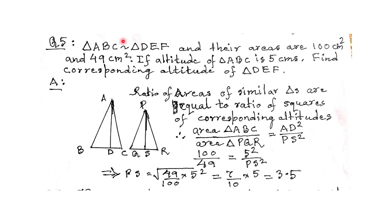Question number 5. Triangle ABC is similar to triangle DEF. Their areas are 100 cm² and 49 cm². If the altitude of triangle ABC is 5 cm, find the corresponding altitude of DEF. The formula here is similar but uses altitudes instead of sides: area of ABC / area of DEF = AD² / PS², where AD and PS are the corresponding altitudes.